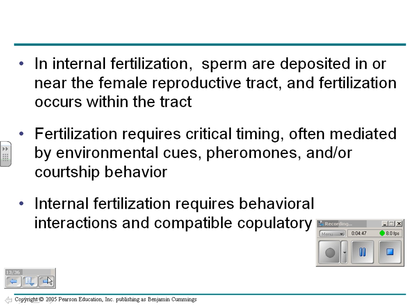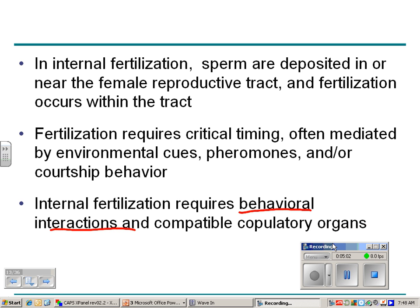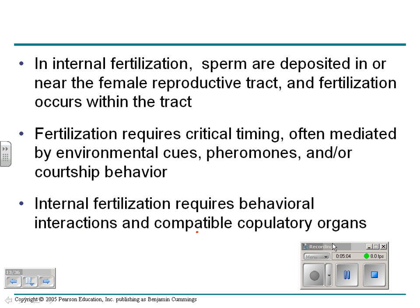Internal fertilization is where sperm are deposited in or near the female reproductive tract. A lot of the time, internal fertilization requires complex behavioral interactions. And of course, as we talked about before when we discussed evolution, you have to have the parts fit — if the parts don't fit, then you're not going to get fertilization internally.